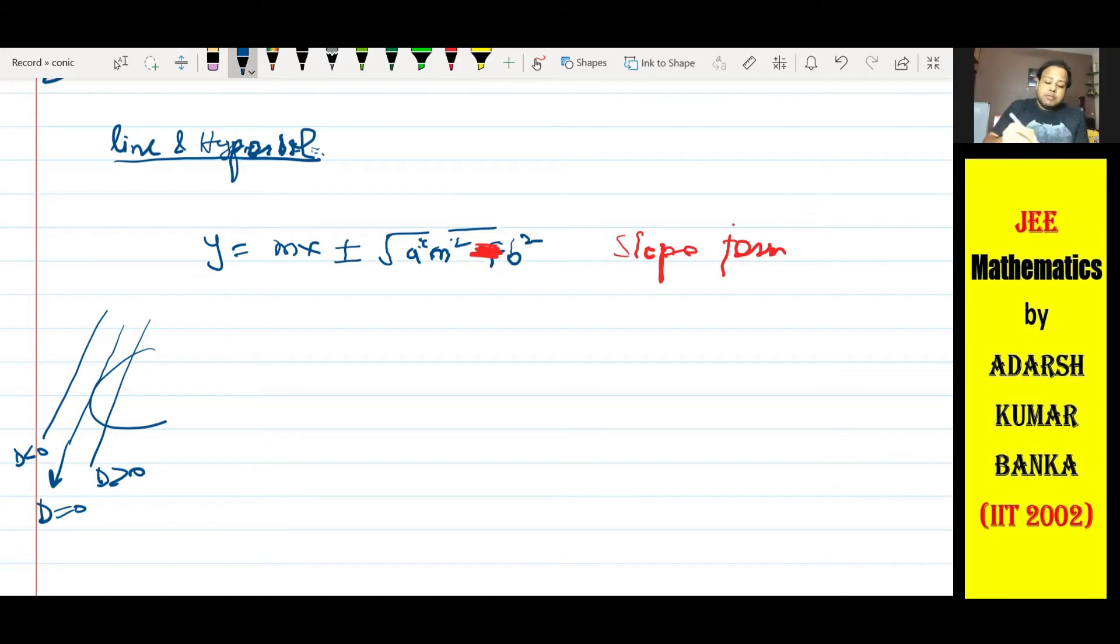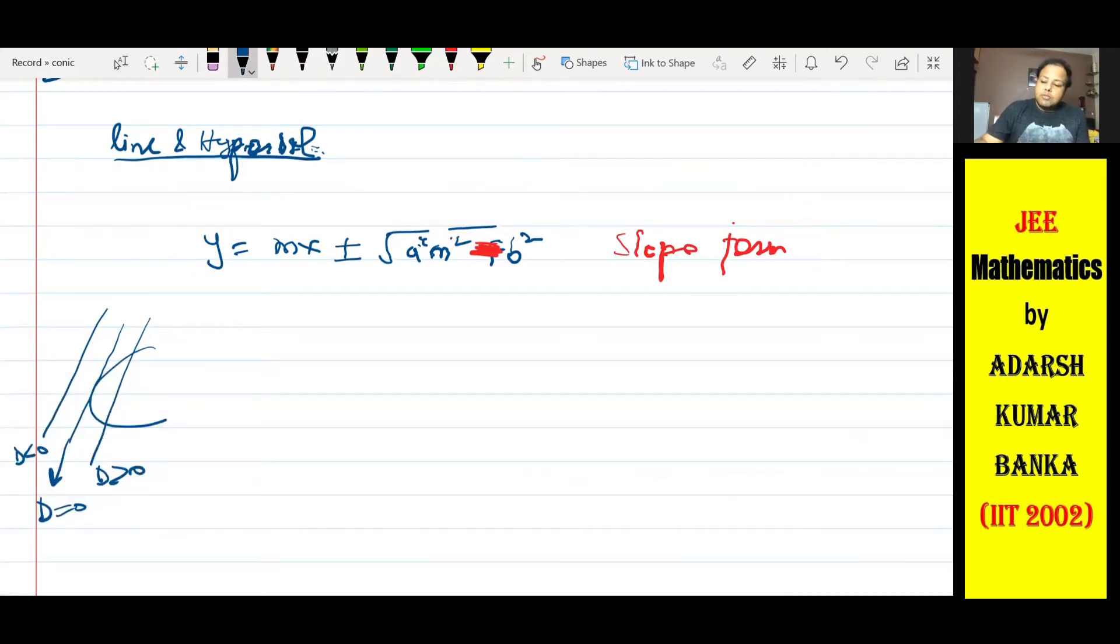Then point form ke baat aati hai. Point form to aapko pata hai, seedha seedha. Kya hota hai point form? Point form is T equals zero. Point form ka matlab kya hota hai? Like tangent at x1, y1. Tangent at x1, y1 ki baat karenge. We know that we use point form, and point form kya hota hai? T equals zero.